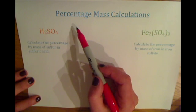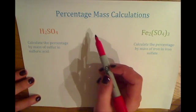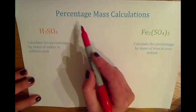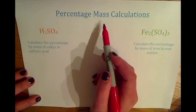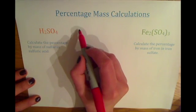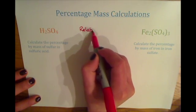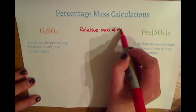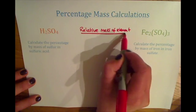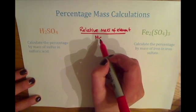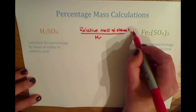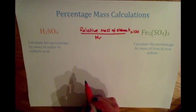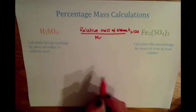This video is about percentage mass calculations. To help you with this video, I'd recommend watching the video on relative formula mass. To calculate the percentage by mass of an element in a compound, you need to do the relative mass of the element divided by the relative formula mass of the compound, times by 100, to get the percentage relative mass of the element in that compound.